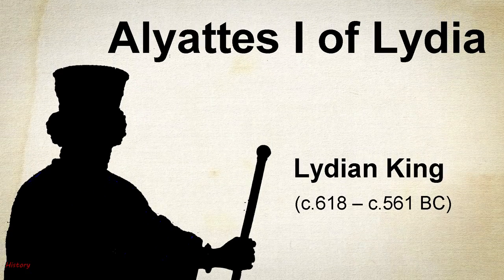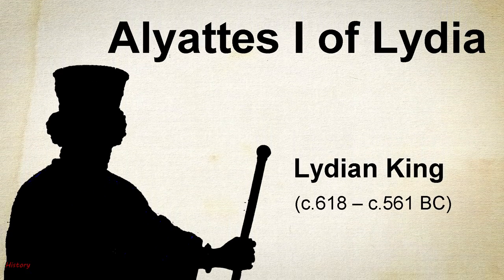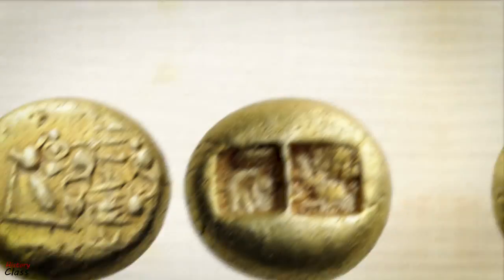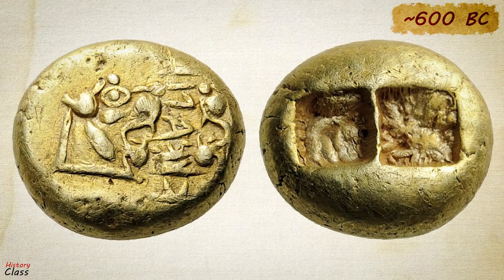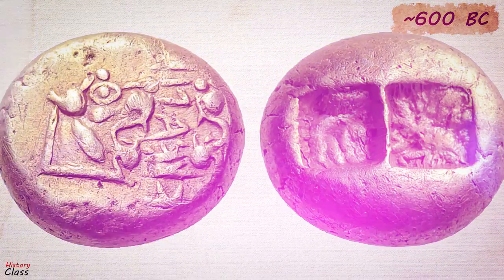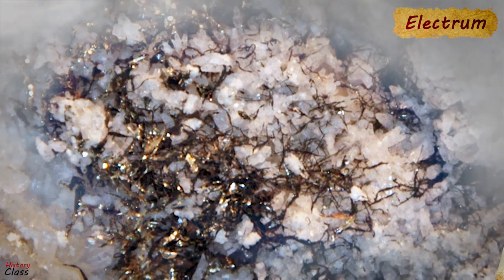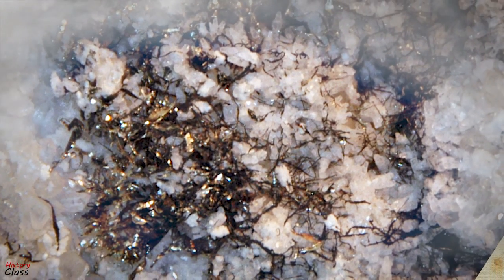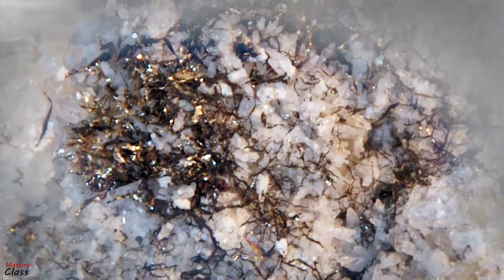Alyattes I of Lydia was the first monarch to issue coins, made from electrum, around 600 BC. Electrum is a naturally occurring alloy of gold and silver, called by the ancient Greeks 'white gold.'